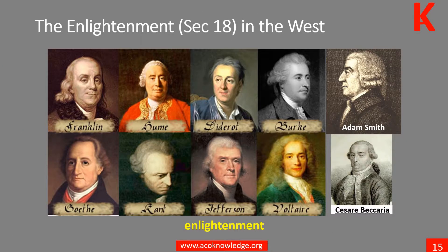Unit 4 analyzes the movements and revolutions that changed the world. It begins with the First Agrarian Revolution, followed by the Golden Age of Athens, and the contributions of China, India, and the Islamic world to the early development of civilization. The Scientific Revolution and the Enlightenment in Europe give the impulse to the First Industrial Revolution and to modern democracy.